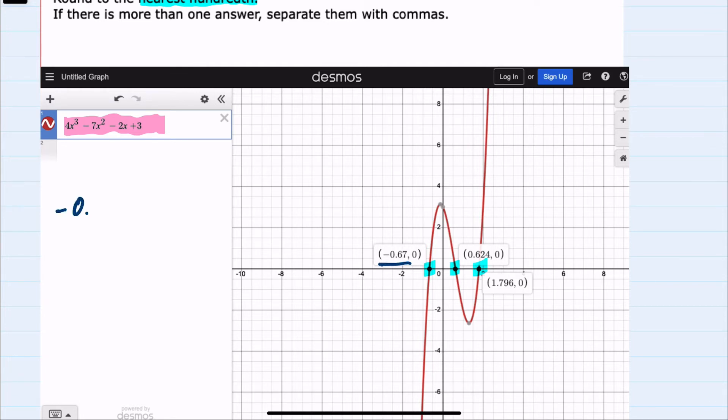The second at 0.62 when rounding to two decimal places, and the third would be 1.80 when rounded to two decimal places. So using a graphing calculator, this is an easy way to find these zeros.